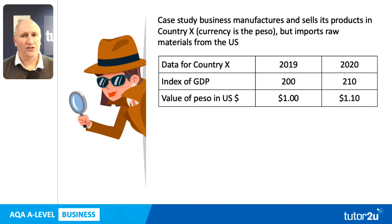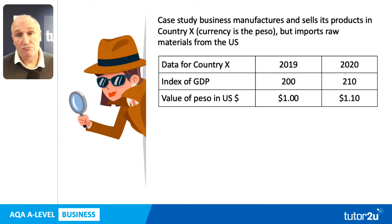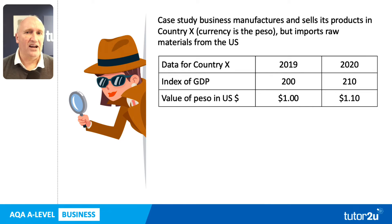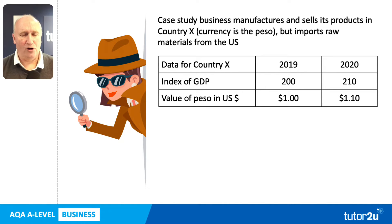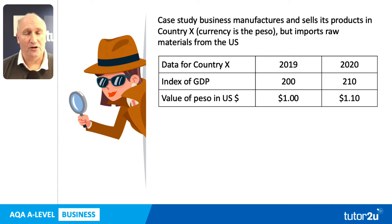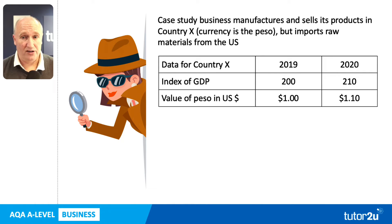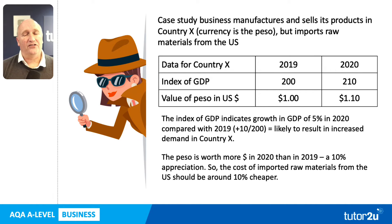Let's quickly remind ourselves of the information given in this case study. We're told about a business that makes something and sells its products in country X. Importantly, country X's currency is the peso. This manufacturing business imports raw materials from the US and therefore pays in US dollars. We're given data for 2019 and 2020: an index of GDP and the value of the peso in terms of US dollars.